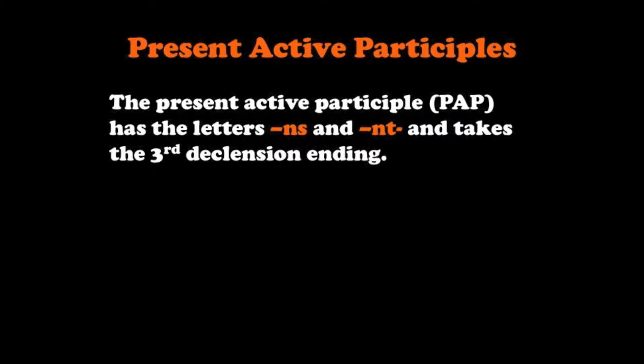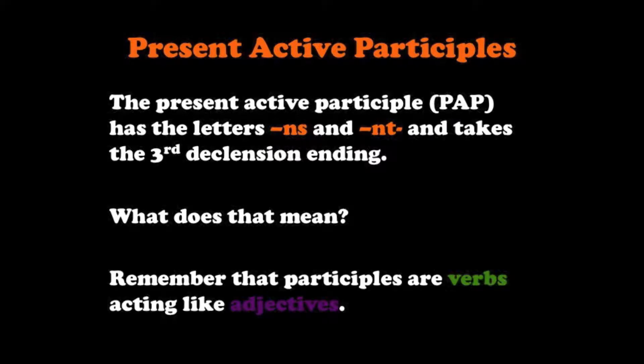The present active participle, or PAP, has the letters NS or NT — that's how you'll identify it — and it's followed by the third declension endings. Followed by the third declension endings? What would that look like? Remember, participles are verbs acting like adjectives. In their role as adjectives, they need to have adjective endings.